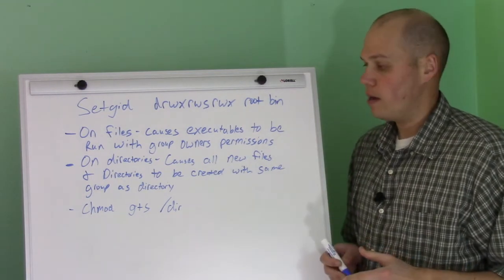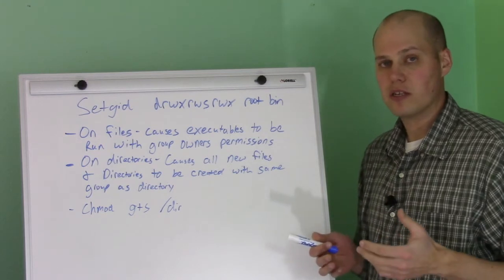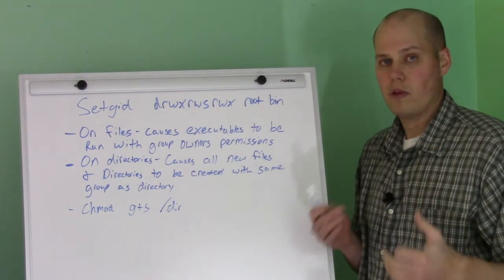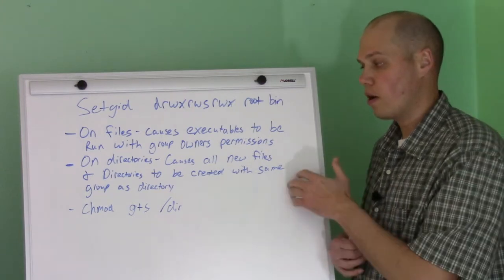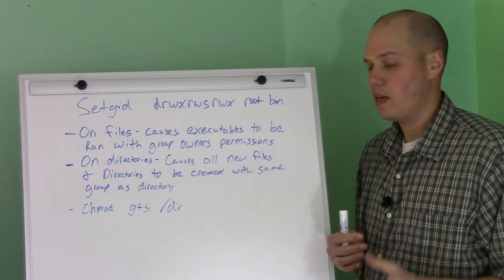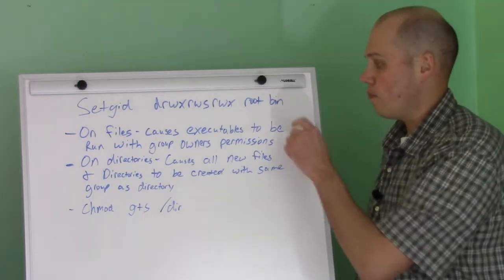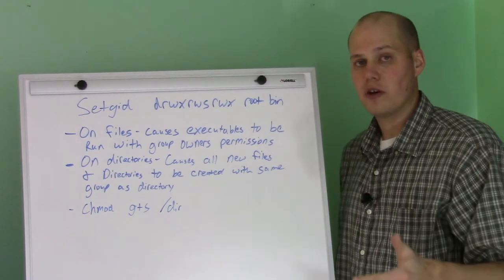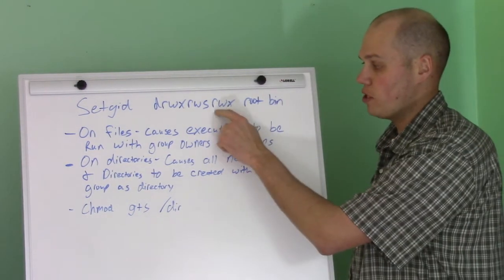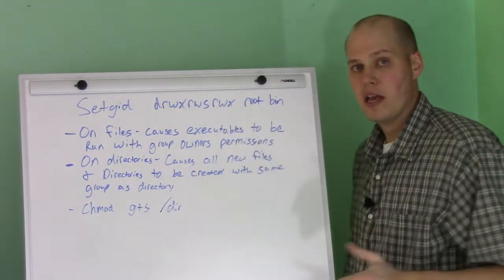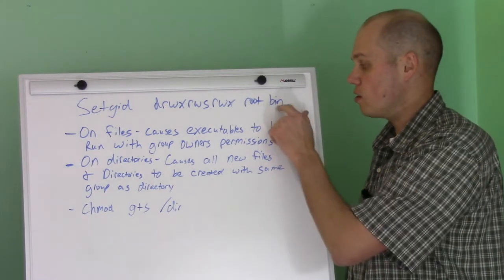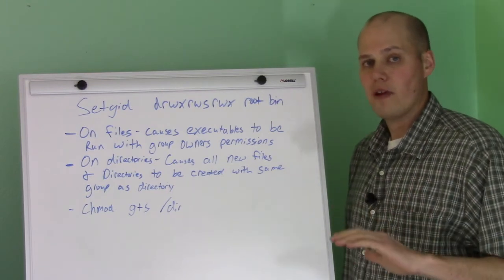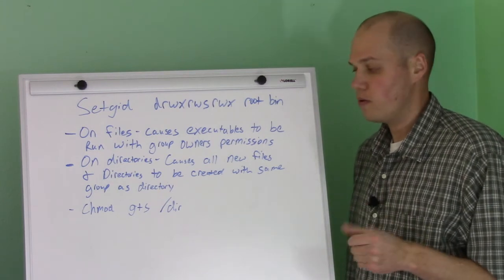This can be helpful if you have a directory where people need to share things but they're in different groups — it simplifies things so anything placed in there automatically inherits the same group. But you need to be aware of the security consequences. Also, if a user who's not in the bin group has write permissions to the directory, and they create a file or directory in it, it'll still inherit the bin group even though that user isn't a member of bin. So you need to take all of that into consideration before you set this up.